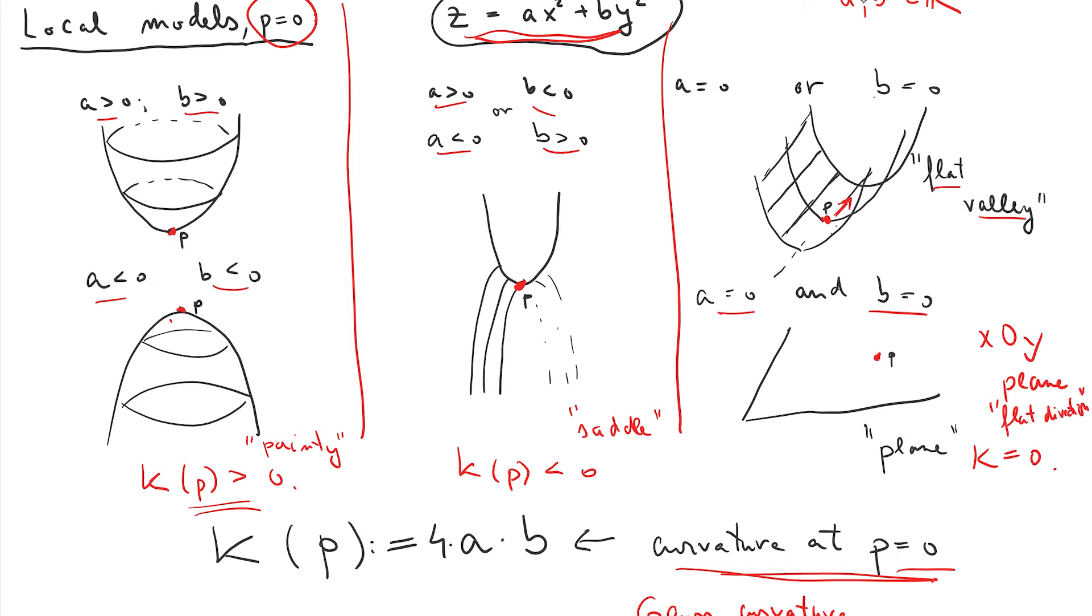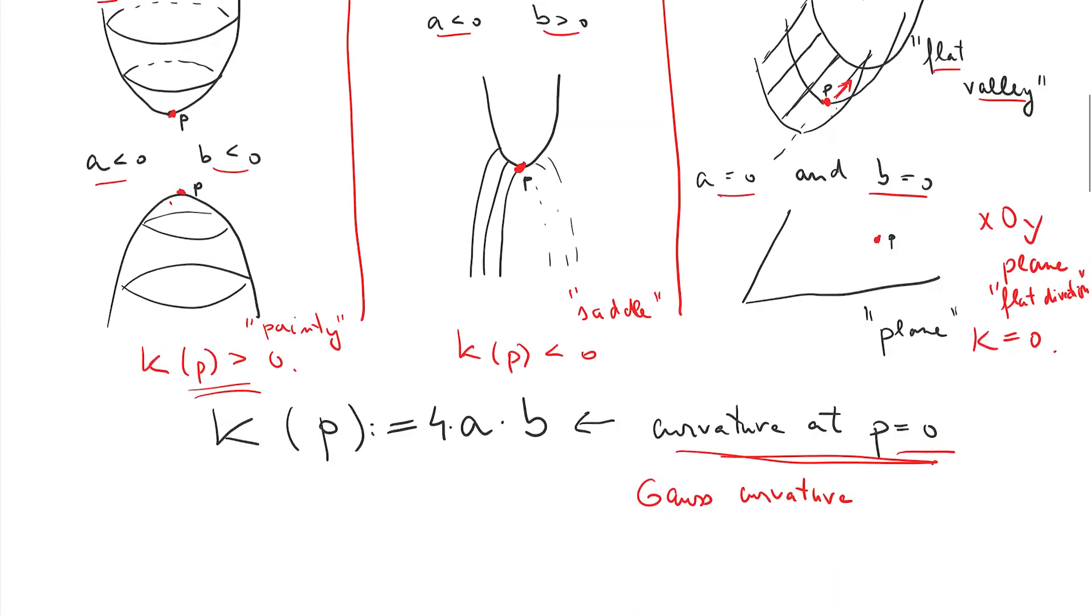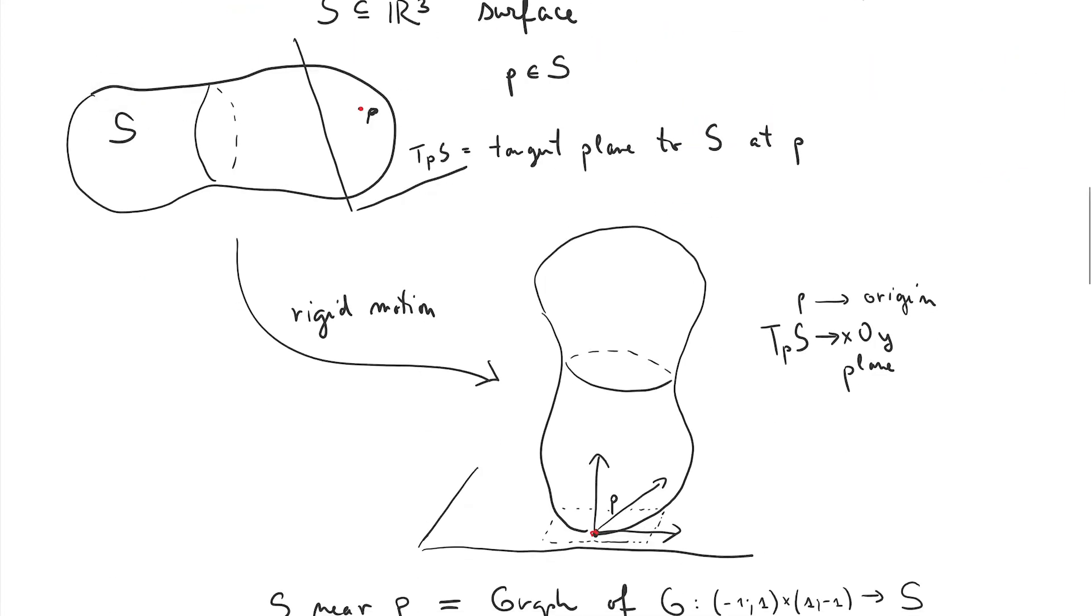So let's keep this in mind, all these words, and this very intuitive definition. And then let's see how this can be expanded to a situation of a general surface in R3. So now I'm taking a general surface embedded into R3, call this your favorite potato. And I'm picking up a point on my surface. And I want to understand how I could define the curvature of S at P.